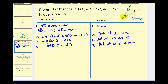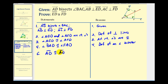We now have Angle Angle in both of these two triangles. To get the side, notice how both triangles share side AD, and in both cases it is the hypotenuse of the right triangle. So for step five, we can say that segment AD is congruent to segment AD, by the Reflexive Property.